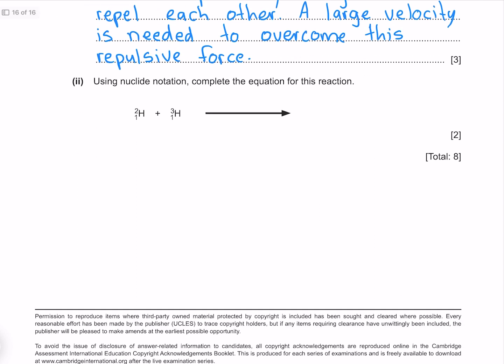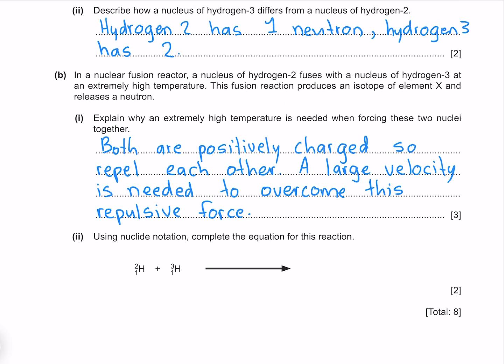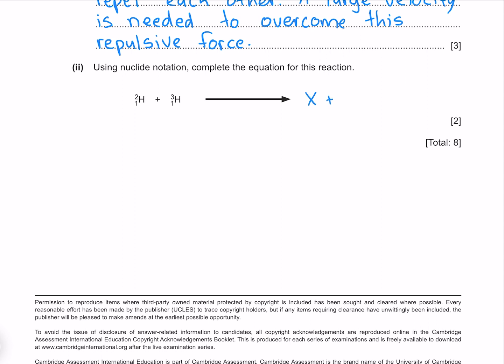Using nuclide notation complete the equation for this reaction. As noted above this fusion reaction produces an isotope of element X and also a neutron. So we have our element X plus our neutron which has an atomic mass of 1 and an atomic number of 0. We see that our atomic masses must add up to 5, 2 plus 3, which means the atomic mass of X must be 4. Our atomic numbers must add up to 2, which means our atomic number of X must be 2.